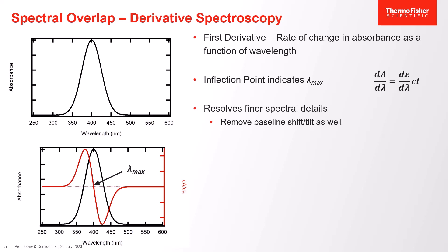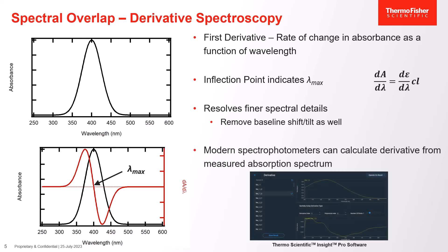This method helps avoid baseline shift or tilt issues and allows us to resolve finer spectral details. Some spectra may have shoulders representative of slightly different electronic transitions within the material, and we can better ascertain what those shoulders relate to through this kind of method. Modern spectrophotometers are able to calculate the derivative directly from the measured absorption spectrum, so this analysis can be done fairly quickly. We retain both the first derivative spectrum and the original absorption spectrum for analysis later if needed.